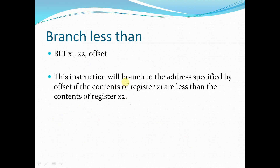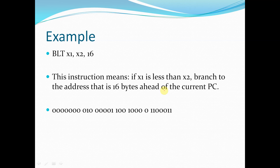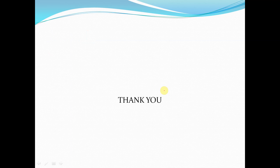Next is branch less than, BLT x1, x2, offset. If x1 is less than x2, the program counter will be PC plus the offset address provided in the immediate value. The instruction will branch to the address specified by the offset if the contents of register x1 are less than those of x2. Example: BLT x1, x2, 16 means if x1 < x2, branch to the address 16 bytes ahead of the current PC. This covers branch instructions in RISC-V architecture. Thank you.